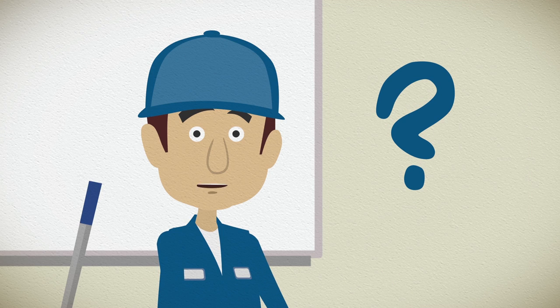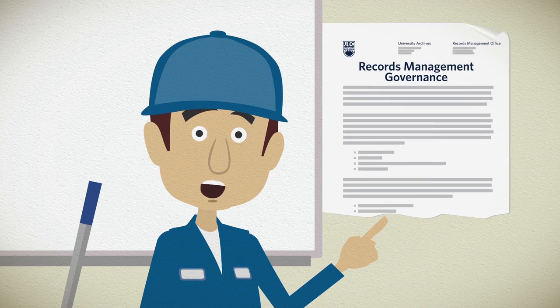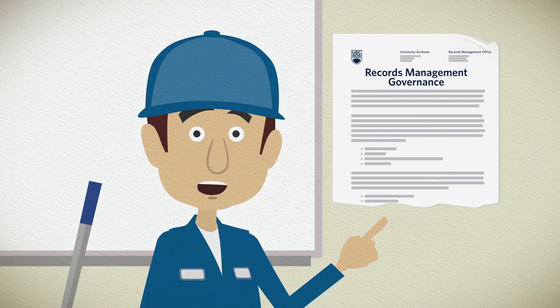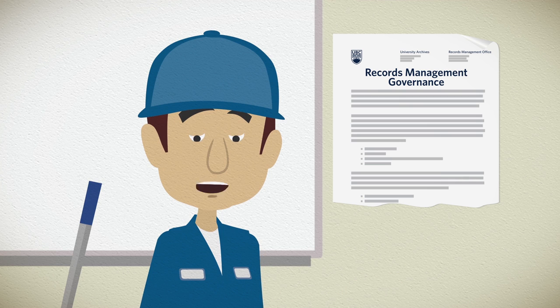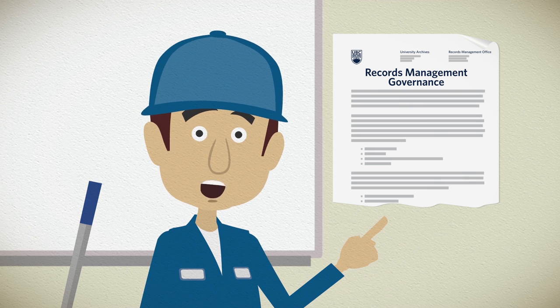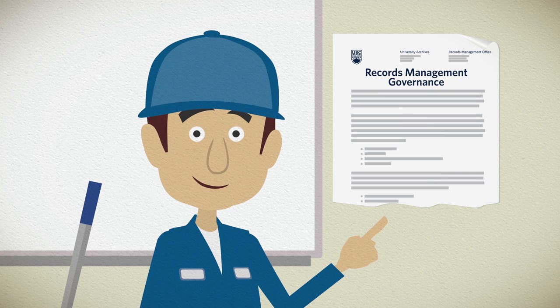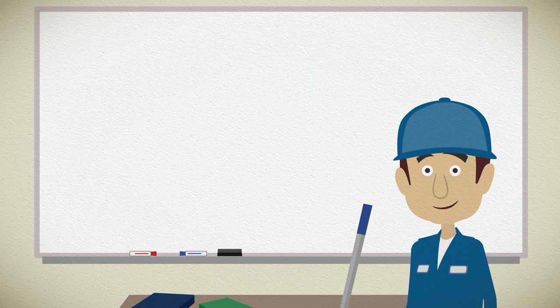What is information governance? Information governance is a set of policies and controls which inform users how to create, name, store, and dispose of information. It can apply to the enterprise or unit level.